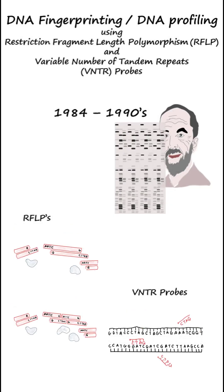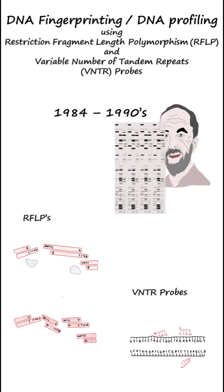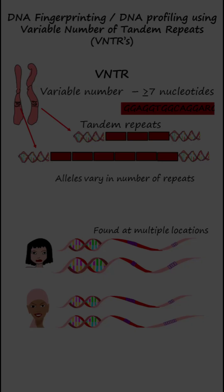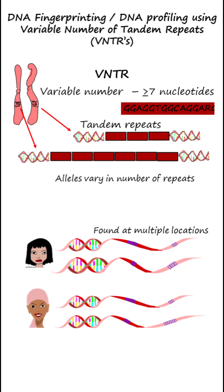DNA fingerprinting originally used restriction fragment length polymorphisms and probes with the core mini-satellite sequence. Mini-satellites are a seven or more base pair unit repeated tandemly in varying numbers.